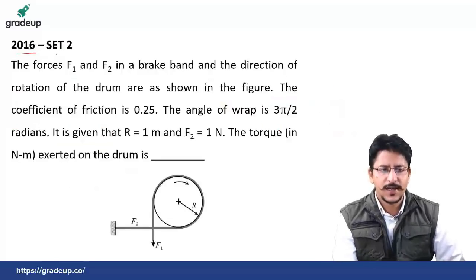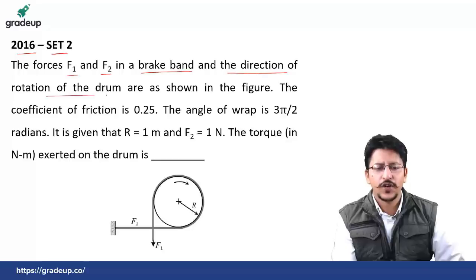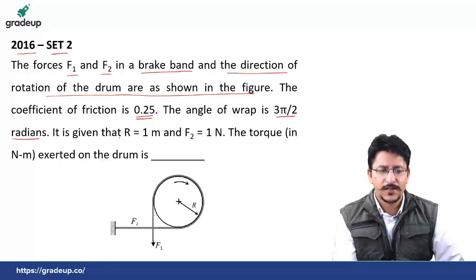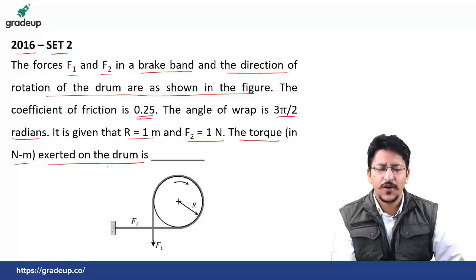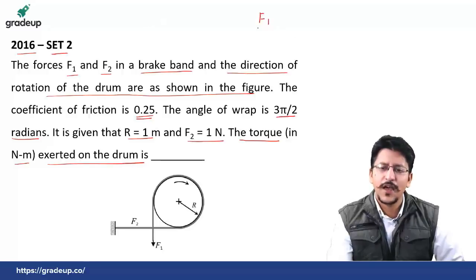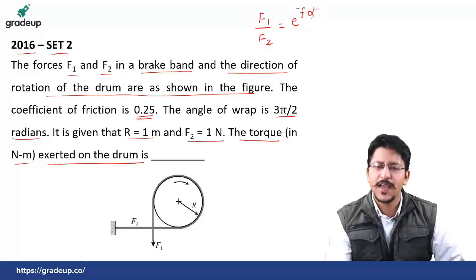Next question, asked in 2016 Set 2: the forces F1 and F2 in a brake band and the direction of rotation of the drum are shown in the figure. The coefficient of friction is 0.25, the angle of wrap is 3π/2 radians. It is given that r = 1 meter and F2 = 1 Newton. We have to find out the torque in Newton meter exerted on the drum. Just use the expression F1/F2 = e^(μα), where μ is the coefficient of friction and α is the angle of wrap.